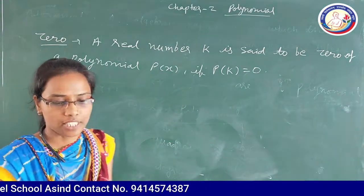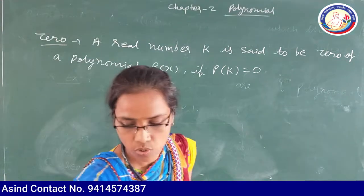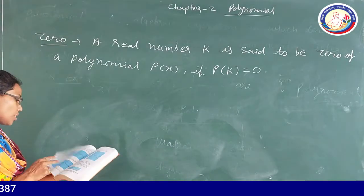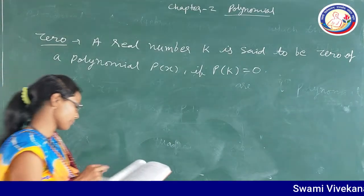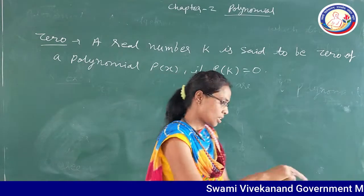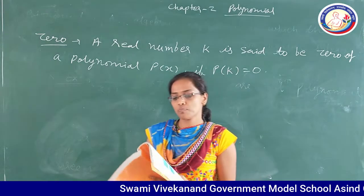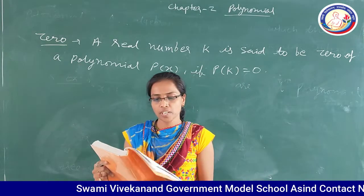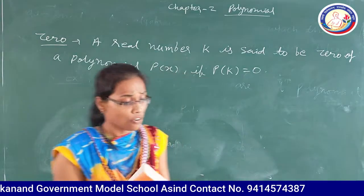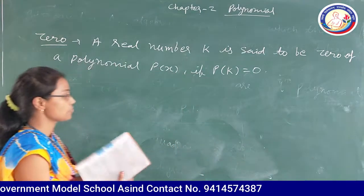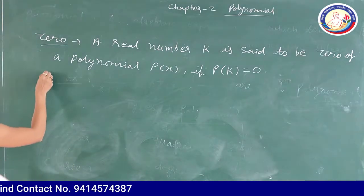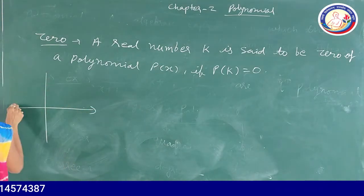Now we start Exercise 2.1, question number 4. The graph of y equals p(x) is given below for some polynomials p(x). Find the number of zeros of p(x) in each case. We have to find the number of zeros from the graph.